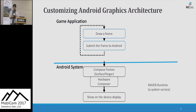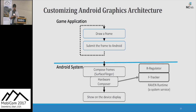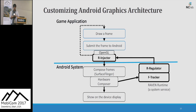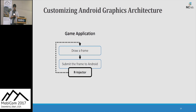By combining all of these and customizing Android graphics architecture, we successfully developed Laban to satisfy the requirements. In detail, we added an Android system service and modified an OpenGL function in Android. The system service released a cloned virtual display and decided the number of skipping frames. After that, it sends the value to our injector, which is implemented by customizing an OpenGL function. After receiving the value, our injector applies an appropriate delay in the rendering thread of games. Then the thread will be stopped and the frame renderings will be skipped for the delay.